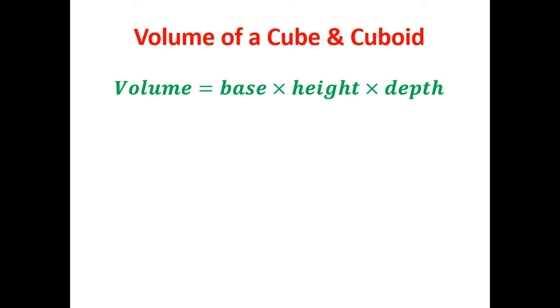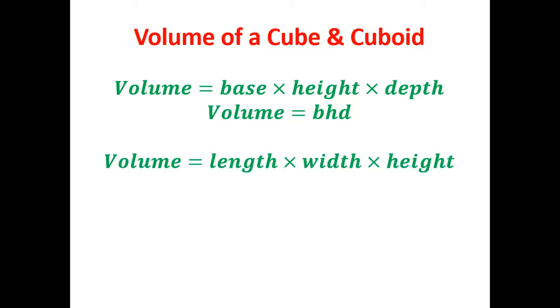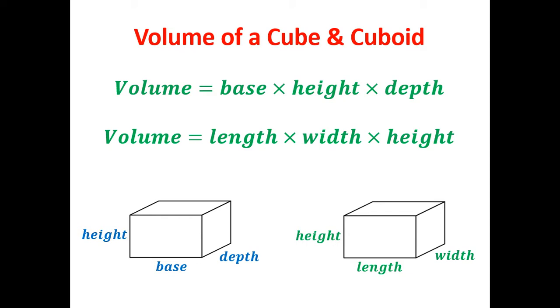The volume of a cube and cuboid is equal to the base multiplied by the height multiplied by the depth. In algebra we can simplify that to BHD, base times height times depth. Some teachers like to teach length times width times height, and they would simplify this to LWH. The volume of a cube and cuboid could be base times height times depth, or it could be length times width times height. It doesn't matter what you'd like to learn.